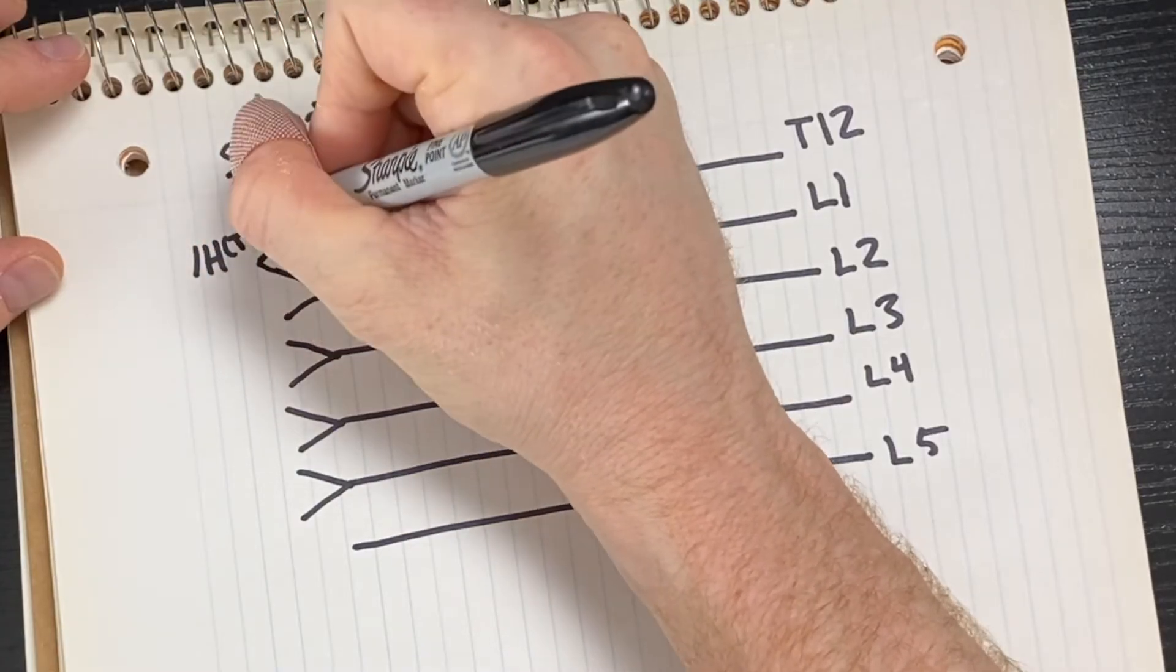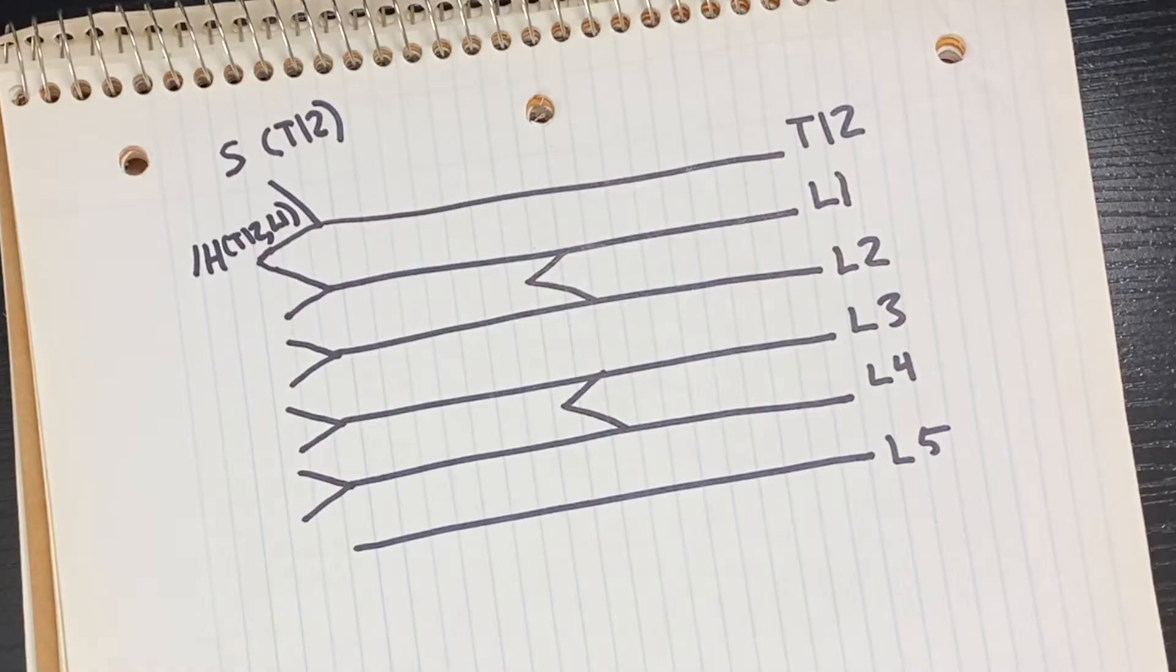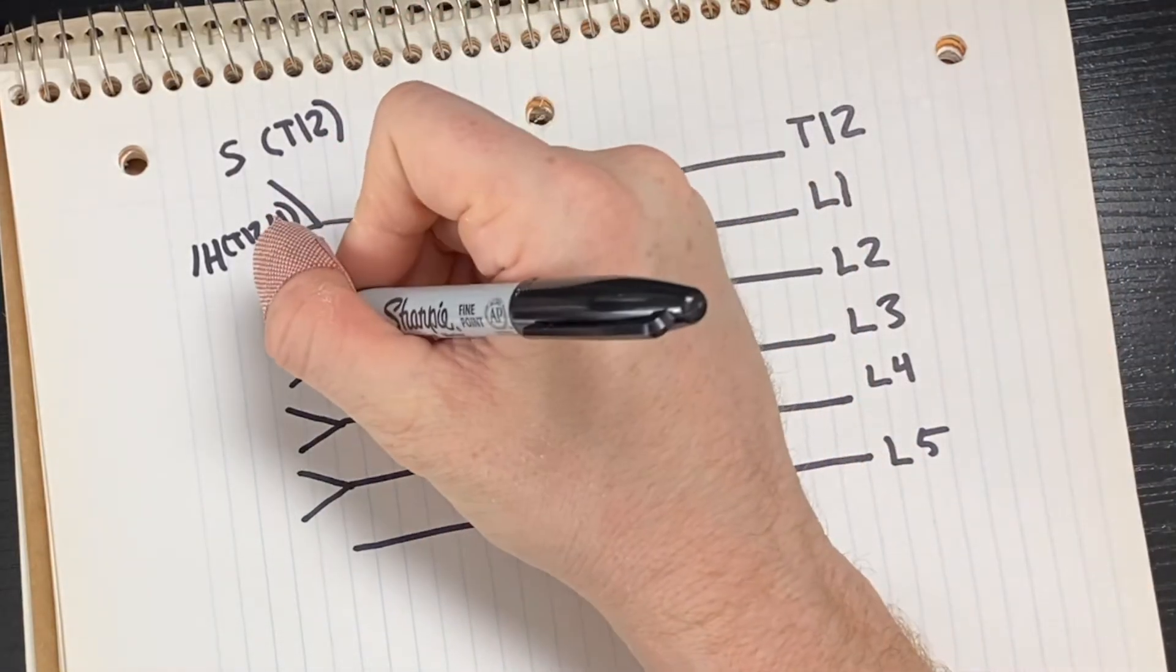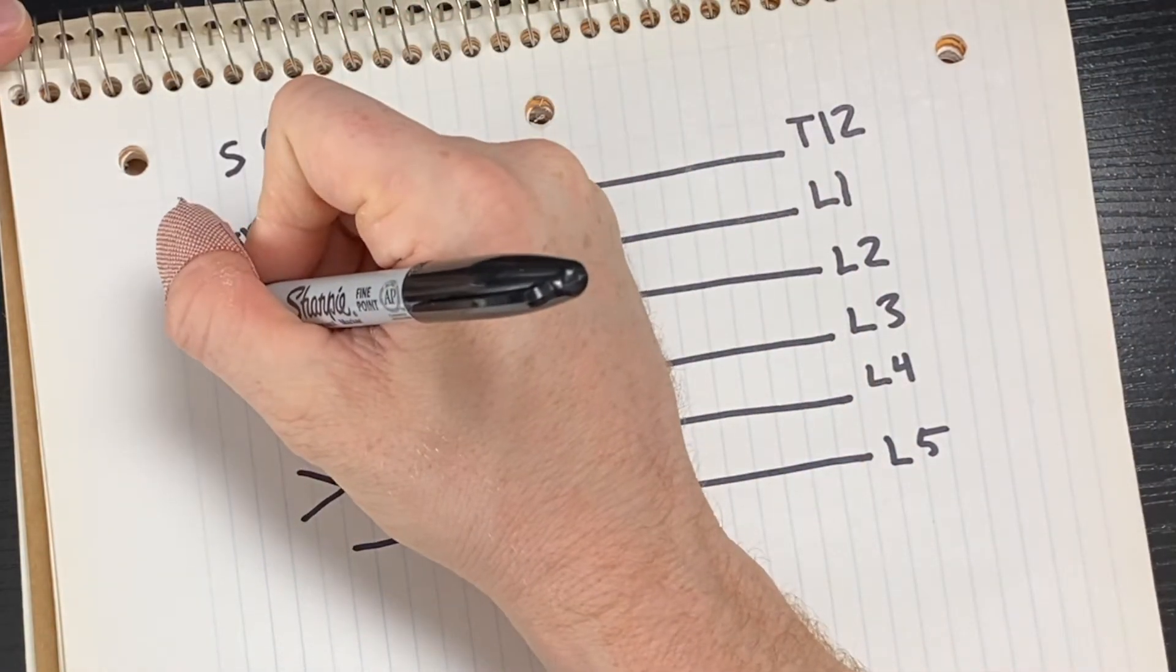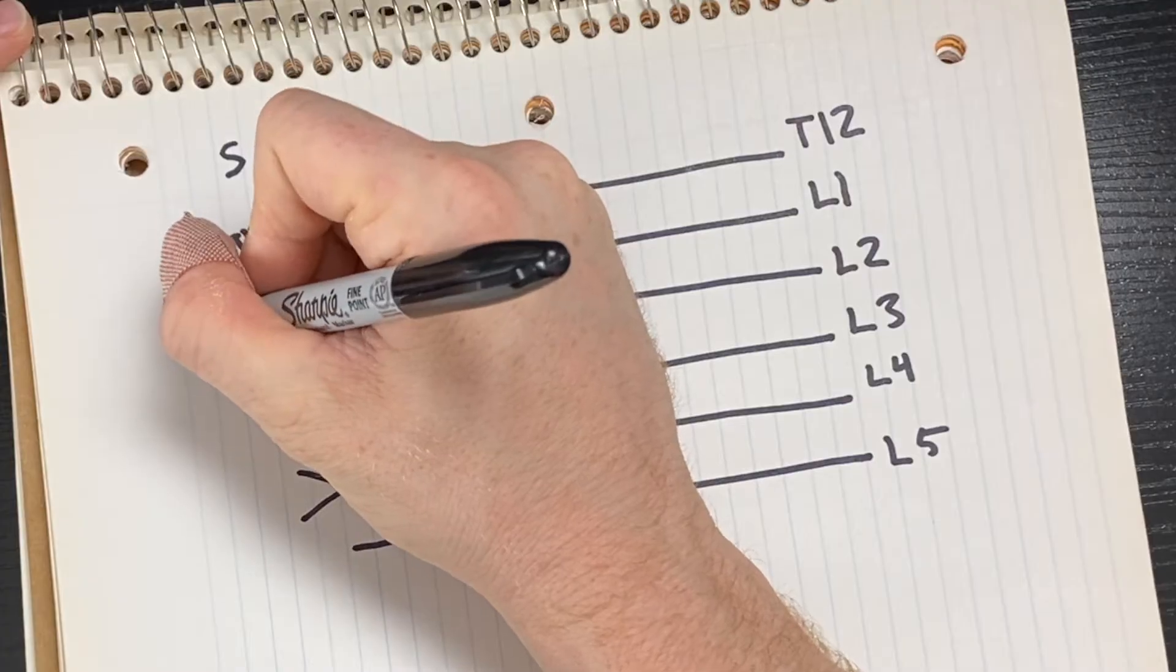The next one directly below is going to be the ilioinguinal nerve, and we know this is just going to be innervated by L1.